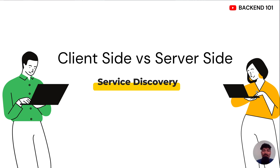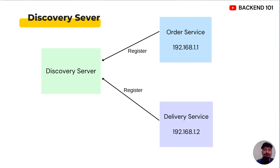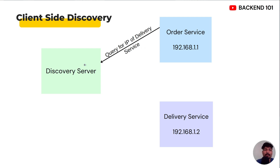Hi, this is back-end 101. In today's episode we are going to discuss the types of service discovery in microservices. I assume you have a basic understanding of service discovery — if not, consider watching the previous episode. This is our basic setup: we have order service and delivery service, both with their own IP address. When these services start, they register their IP address to the discovery server, which maintains the IP addresses of the running services.